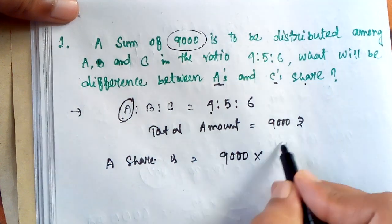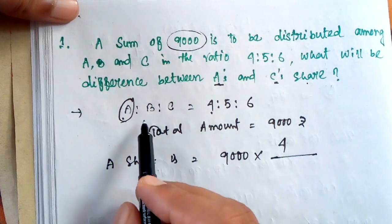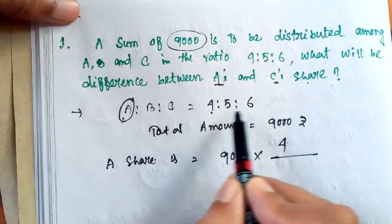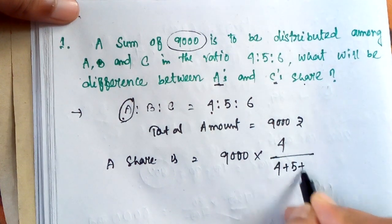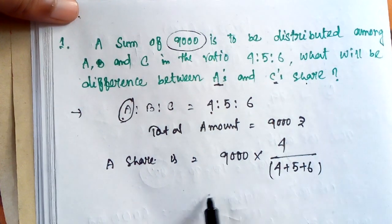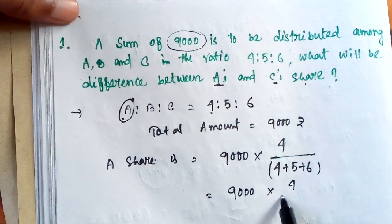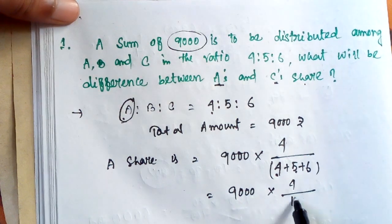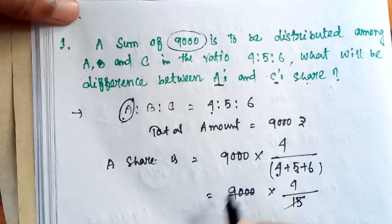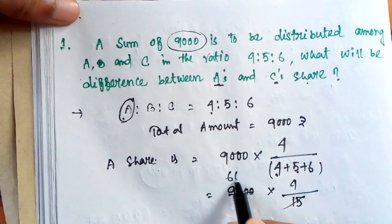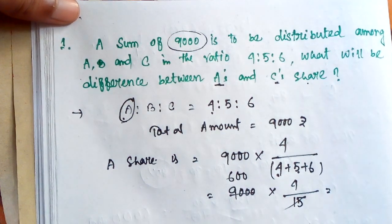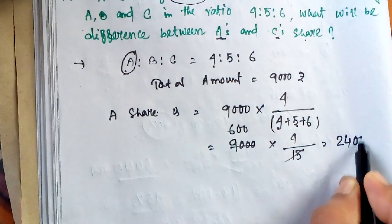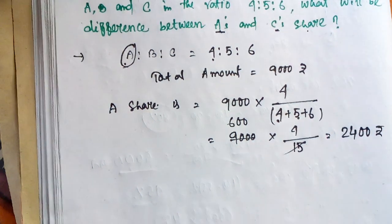you can know A's share is total amount into A's proportion. A's ratio is 4. Now, 4 and here we take the whole ratio. Addition of whole ratio 4 plus 5 plus 6. Now, 9000 into 4 by 15. We can divide here 600 and A's share is 2400 rupees.